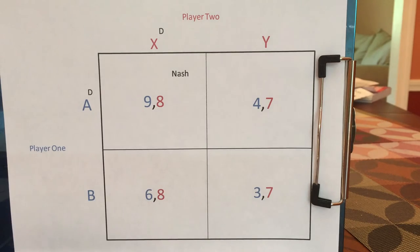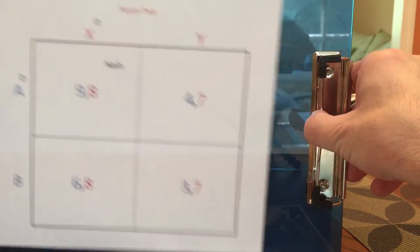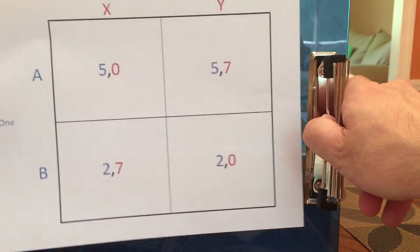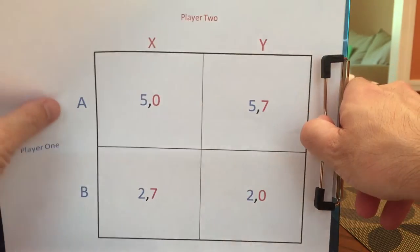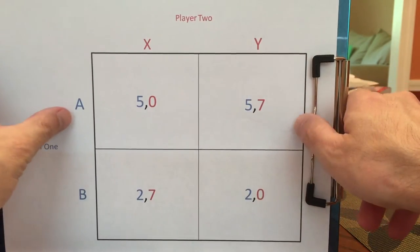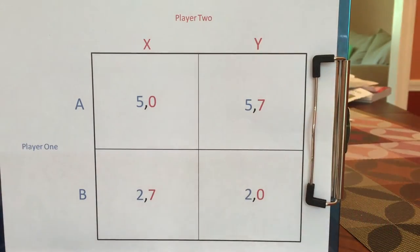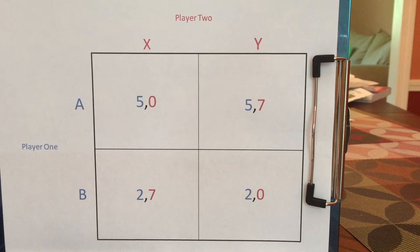And if there's an equilibrium in which no one regrets what they did given how the other person moved, then that can be a Nash Equilibrium. Let's do another game — why don't you pause the video and try to figure out what is the Nash Equilibrium? There's one Nash Equilibrium in this game.